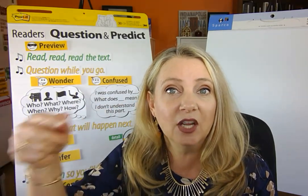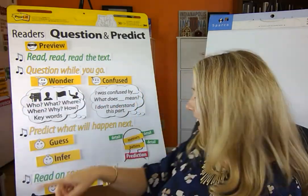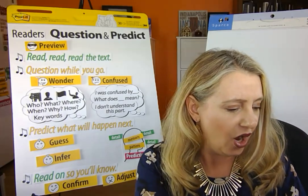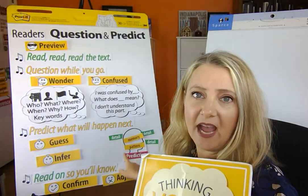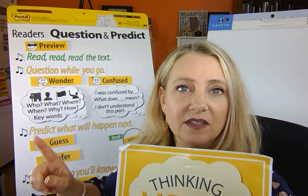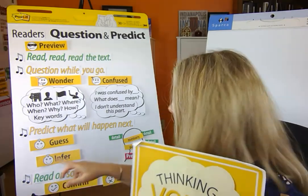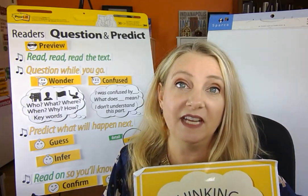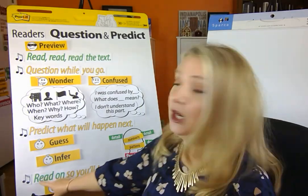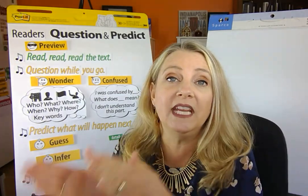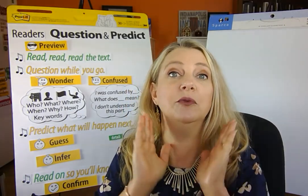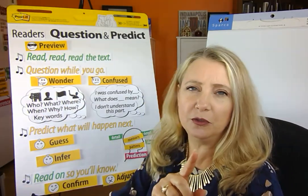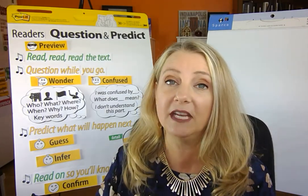We're always also thinking ahead about what might come next. We do this by collecting details and then thinking about them with our thinking voice — our yellow thinking voice — looking for patterns and memories. Then we say, I know what's going to happen next, or I know what it's going to say. Some people call that making a guess, but we learned it's really an inference. A prediction is a form of an inference. Then we read on so you'll know, and when we get more information in the text, we either confirm it or adjust our thinking a little because we've learned something new.